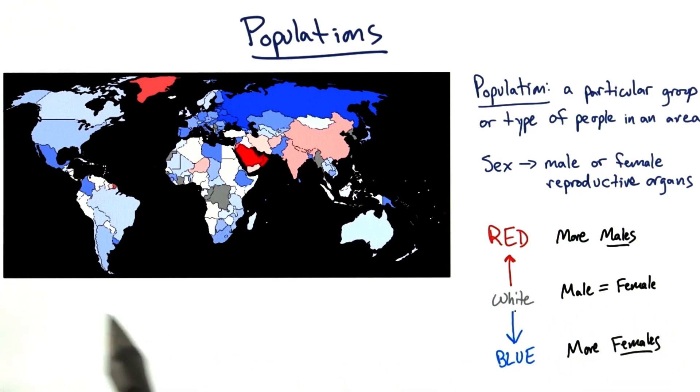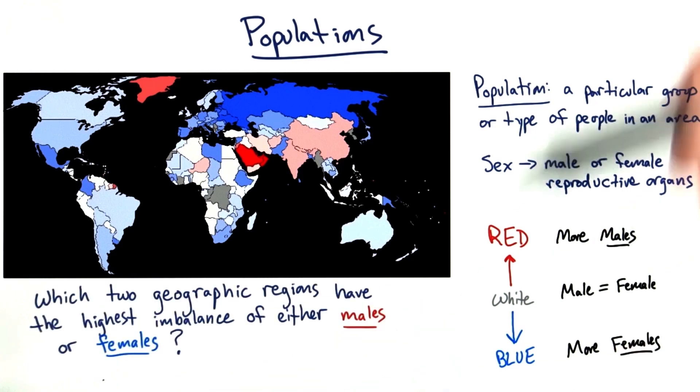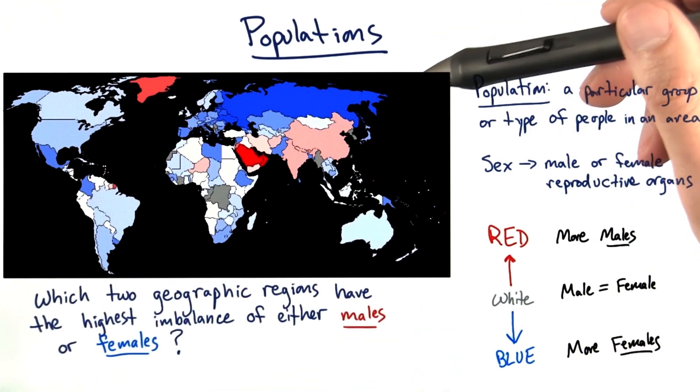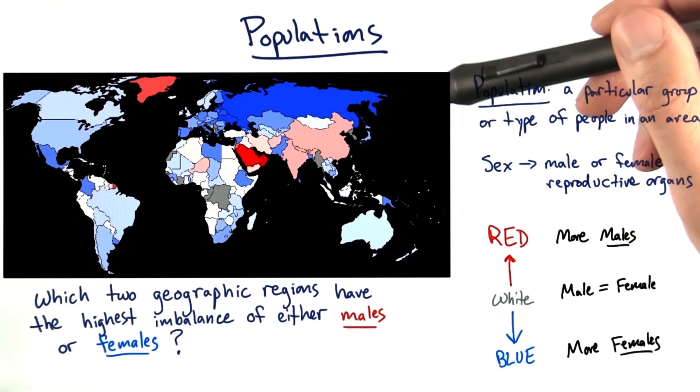So what I want you to do is look at the map here and tell me, which two geographic regions in the map here have the highest imbalance of either males or females?